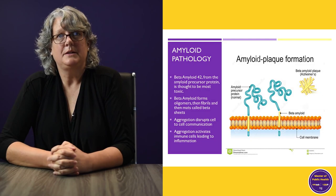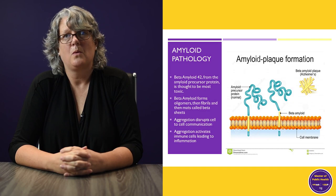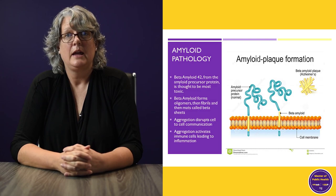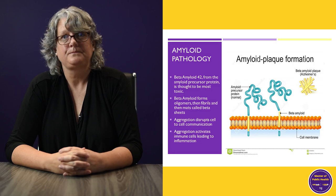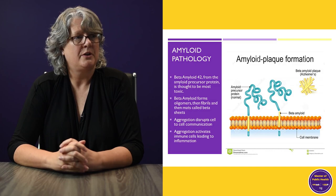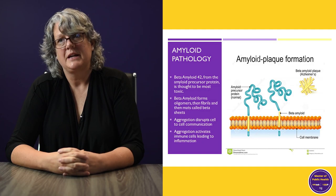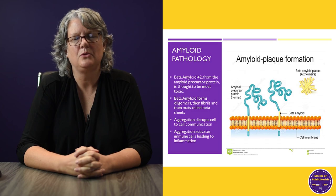The amyloid hypothesis is based on misfolded beta amyloid. Beta amyloid is normally part of the structure of nerve cells and is important for nerve growth and communication — the amyloid precursor protein is embedded in the membrane of the cell. When you're young, beta amyloid does what it needs to do and gets cleared out in large quantities. But as people get older, it tends to clump up. This aggregation of beta amyloid plaque formation disrupts cell-to-cell communication and leads to inflammation, which is damaging to nerve cells.